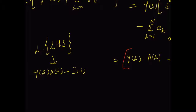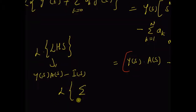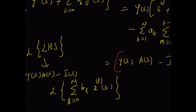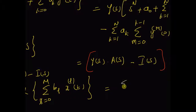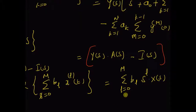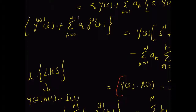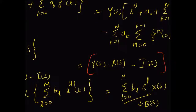Now for the right-hand side, that is the Laplace transform of the weighted sum L equal to 0 to m, b_L and the Lth derivative of x(t). Since all the initial values of x(t) and its derivatives are zeros, we can write the Laplace transform as the summation L equal to 0 to m, b_L times s^L into X(s). All other terms are zero based on the zero initial conditions. And since this sum is clearly equal to the polynomial B(s), the Laplace transform of the right-hand side is B(s) multiplied by X(s).